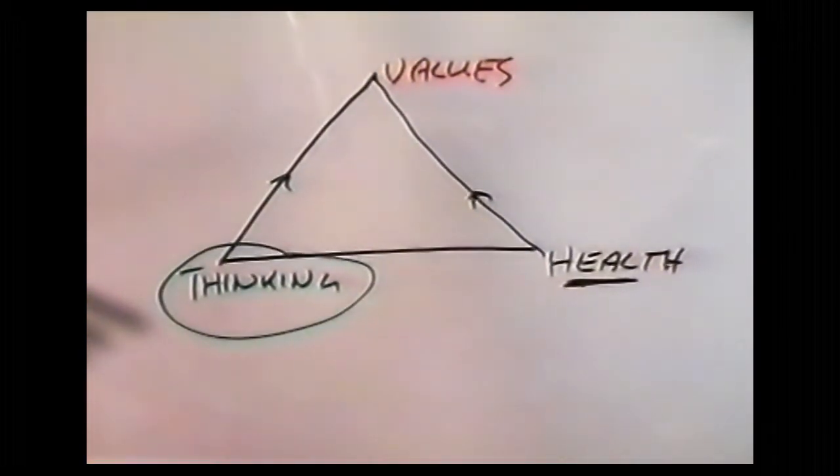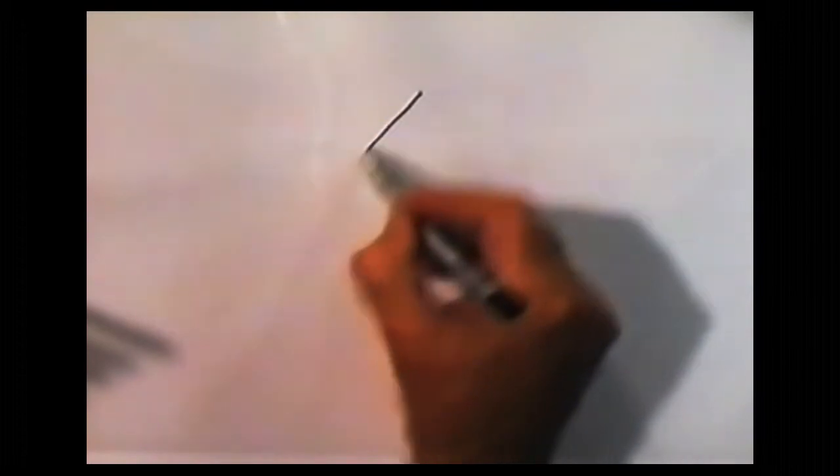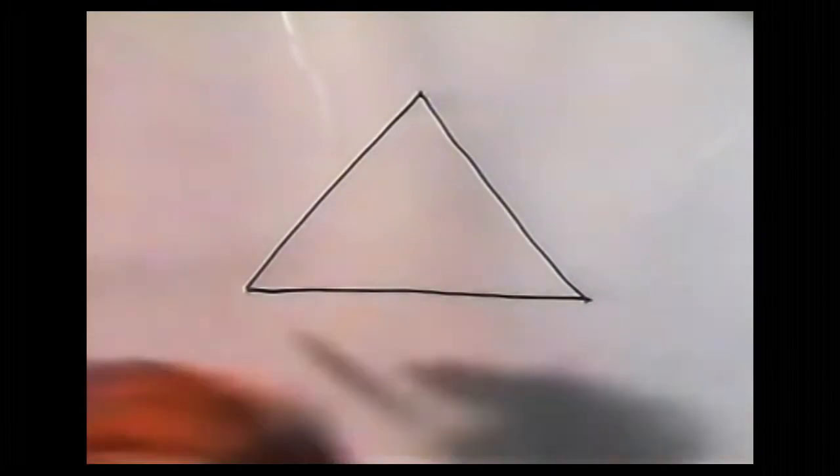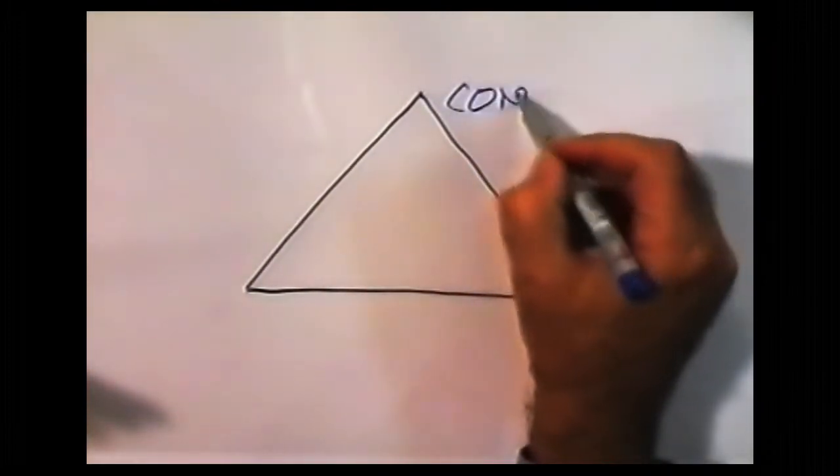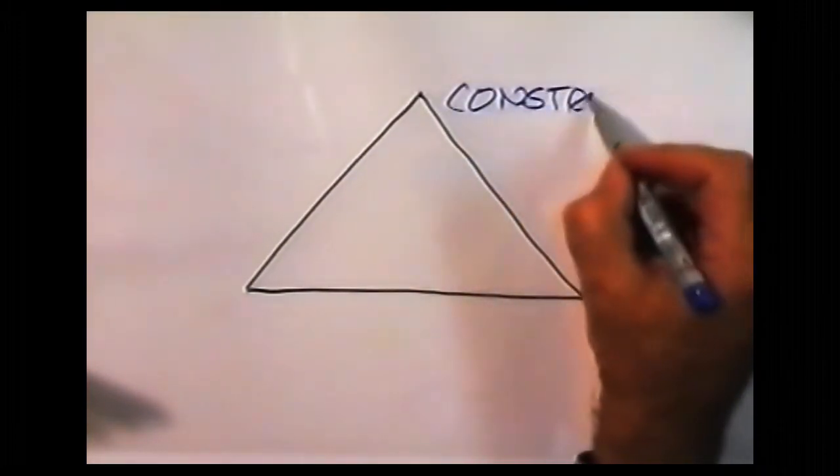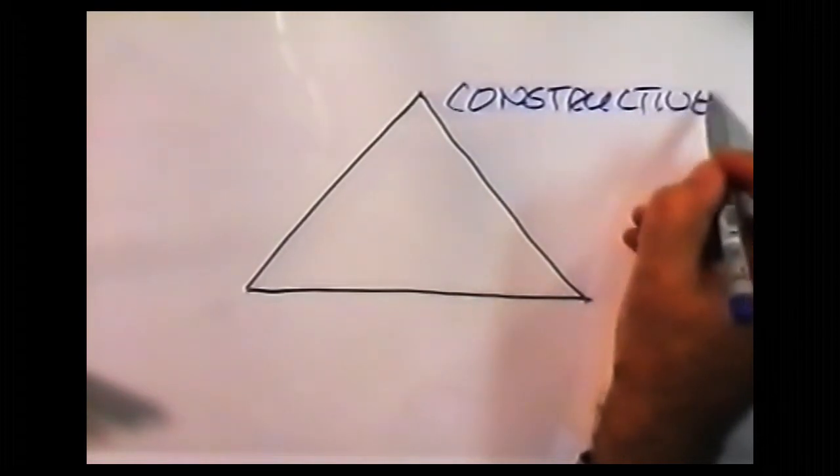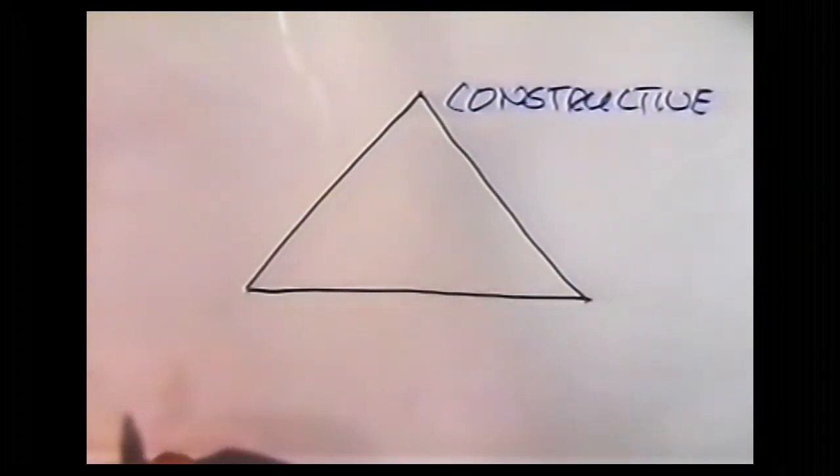Now let's look at another triangle. At the top we have constructive thinking. Constructive thinking is how we build things, how we improve things, how we make things happen.